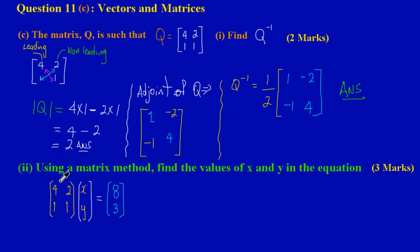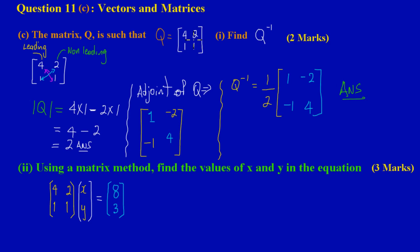In this exercise, Part 2, we are asked to use a matrix method to find the values of X and Y in the equation below. This is a typical matrices equation worth three marks. Before I move on, let me explain the basic concept: when working with a matrix equation, you multiply both sides of the equation by the inverse of the matrix at the front — which here is [4,2,1,1], the same matrix Q from Part 1.